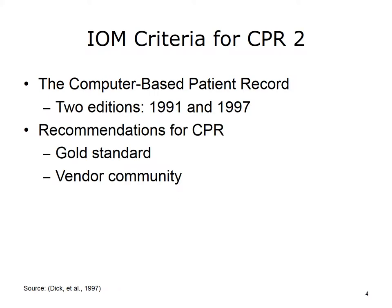Both the 1991 first edition of the computer-based patient record and the second edition of 1997 offered recommendations that remain today as the gold standard for features that should be incorporated into electronic health records. In fact, they also underlie the more recent recommendations for a good electronic health record. Finally, in part because of the desire for purchasing systems that will support meaningful use of electronic health records, there is more interest in the vendor community in incorporating these attributes.